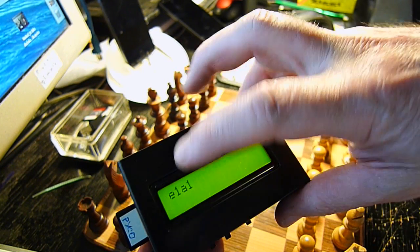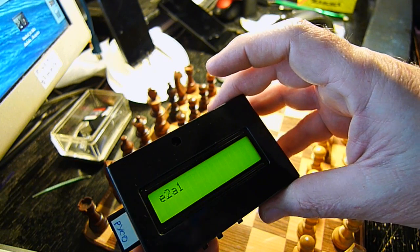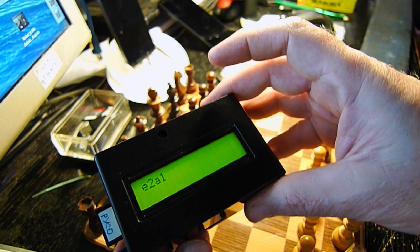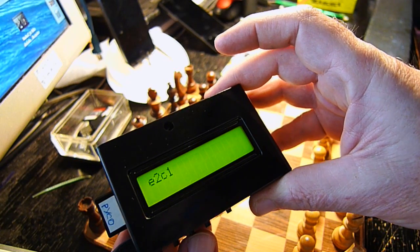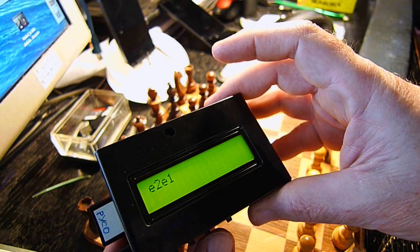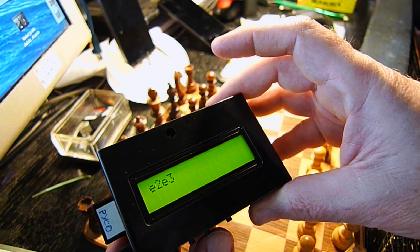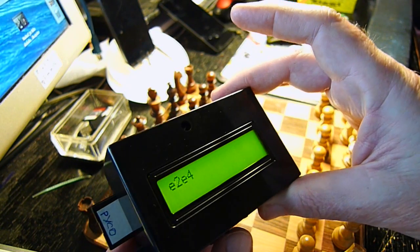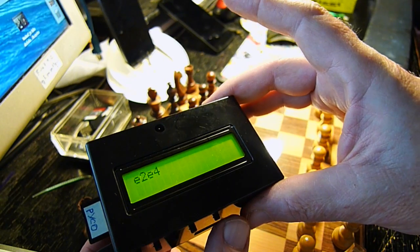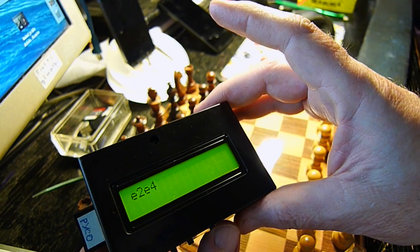The second button now turns around the number. E2. This is our first move. Now the third button. E, and my first move will be E2, E4. Okay. I confirm it with pressing the last button here.